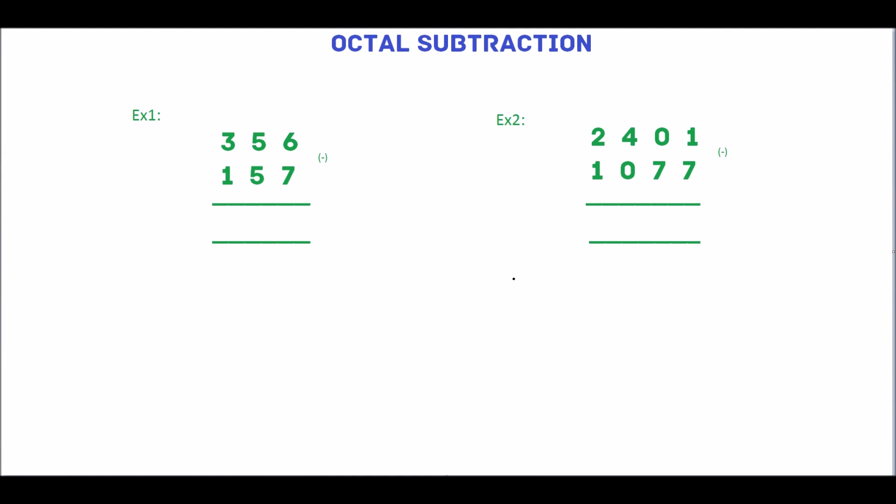We will see how to subtract two octal numbers. First we will solve example 1. Start with rightmost digits which are 6 and 7.